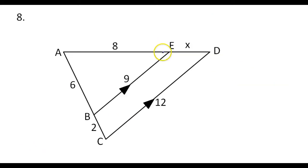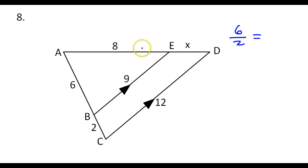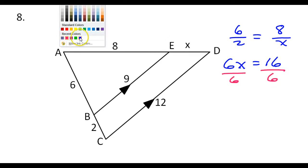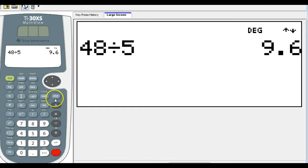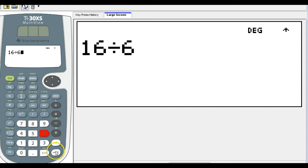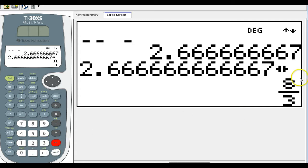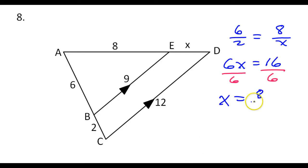That's number 7. For number 8, we will use the side splitter theorem. This x is a part — it's not a whole length on the triangle, so we can use the side splitter theorem. So we will have 6 over 2 is equal to 8 over x. Cross multiply: 6x equals 16, divide both sides by 6. That's 2.6 repeating, so let's leave it as a fraction: 8 over 3.